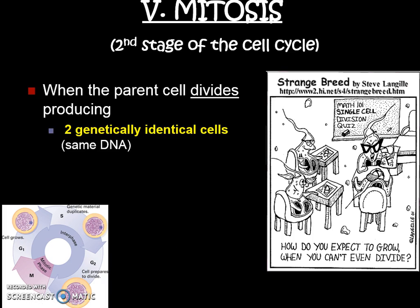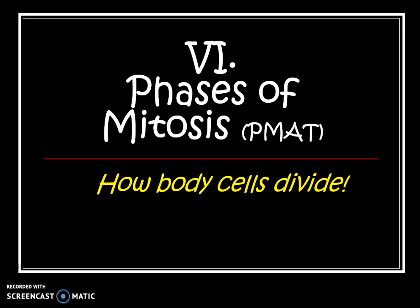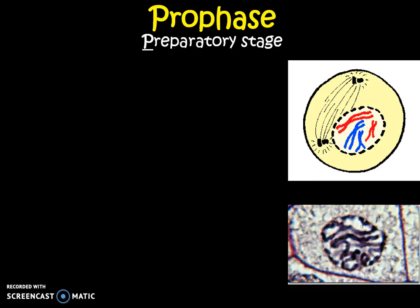Mitosis is when we're really doing the division part, with the goal that at the end we want two genetically identical cells with the same exact DNA. The DNA dances around and we have to make sure that at the end there are identical copies of DNA in both new cells. To help us remember the different parts of mitosis, I like to use the acronym PMAT for each phase and their order.